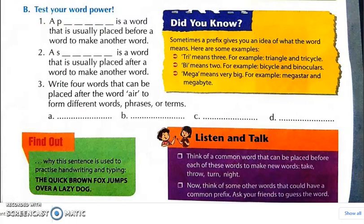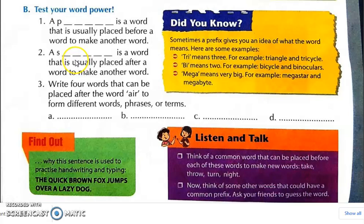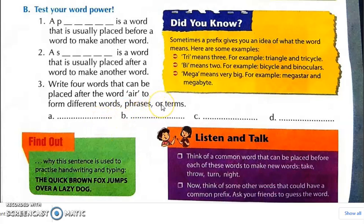Test your word power. A prefix is a word that is usually placed before a word to make another word. A suffix is a word that is usually placed after a word to make another word. Write four words that can be placed after the word 'air' to form different word phrases or terms — for example: force, line, stripes, pocket, craft, port, way, etc.